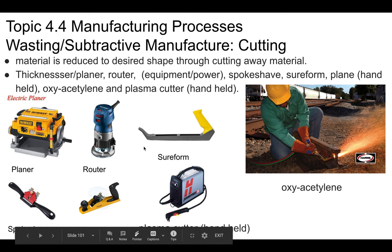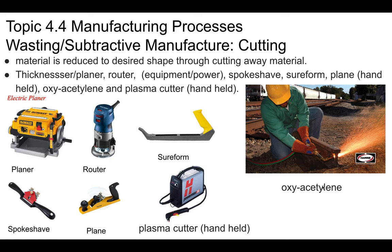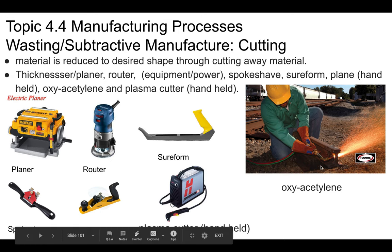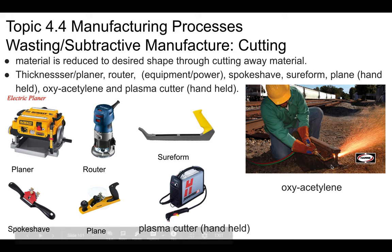Most of those cutting tools are handheld, except for the electric planer. You also have oxy-acetylene — oxygen combined with acetylene gas. When lit, the oxygen helps the acetylene burn incredibly hot, and you use this torch to cut through materials. You can see an example of cutting through a large piece of steel with an oxy-acetylene torch.